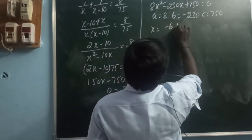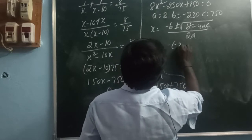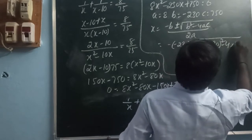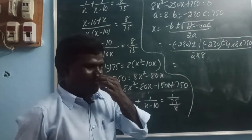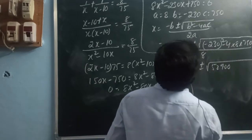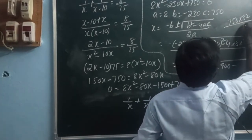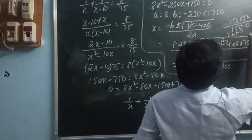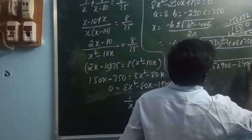Applying the quadratic formula: x = (−(−230) ± √((−230)² − 4×8×750)) / (2×8) = (230 ± √(52900 − 24000)) / 16 = (230 ± √28900) / 16.